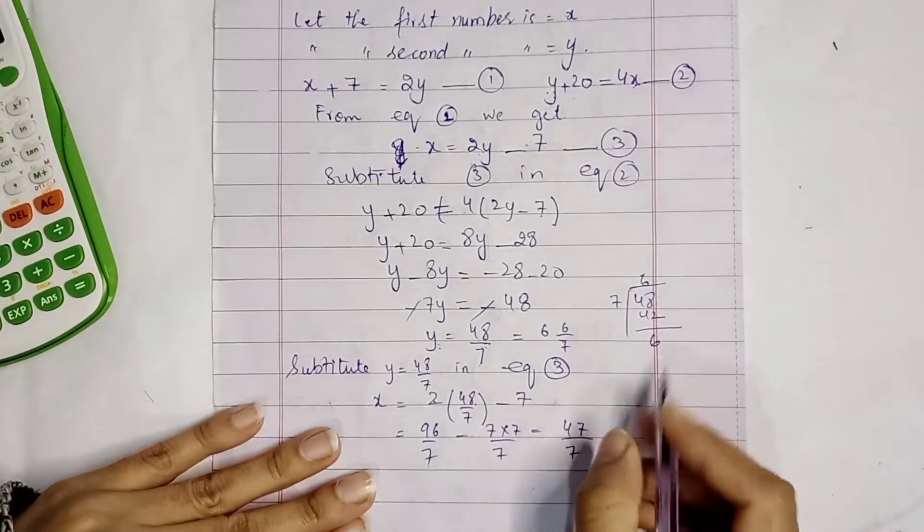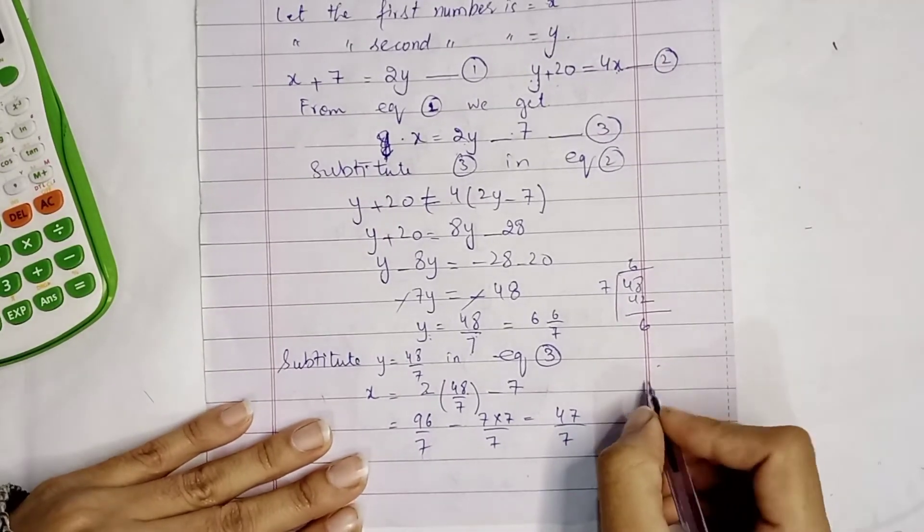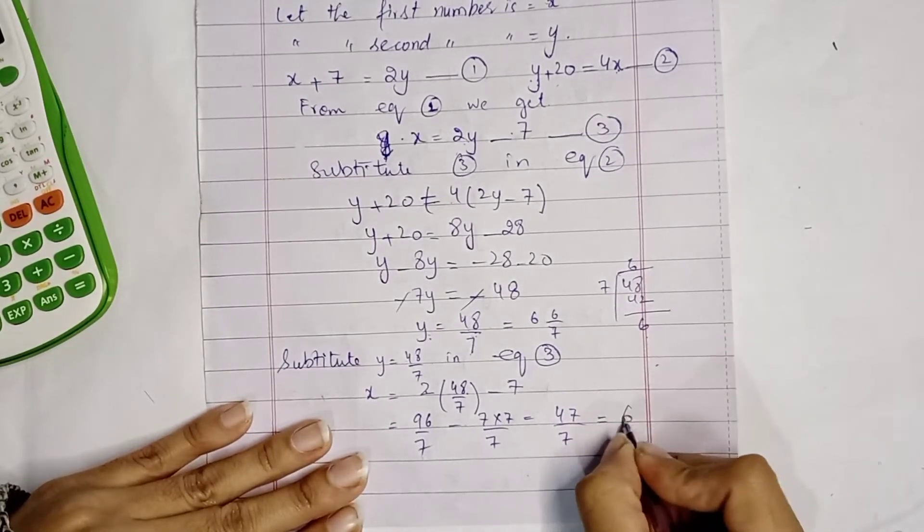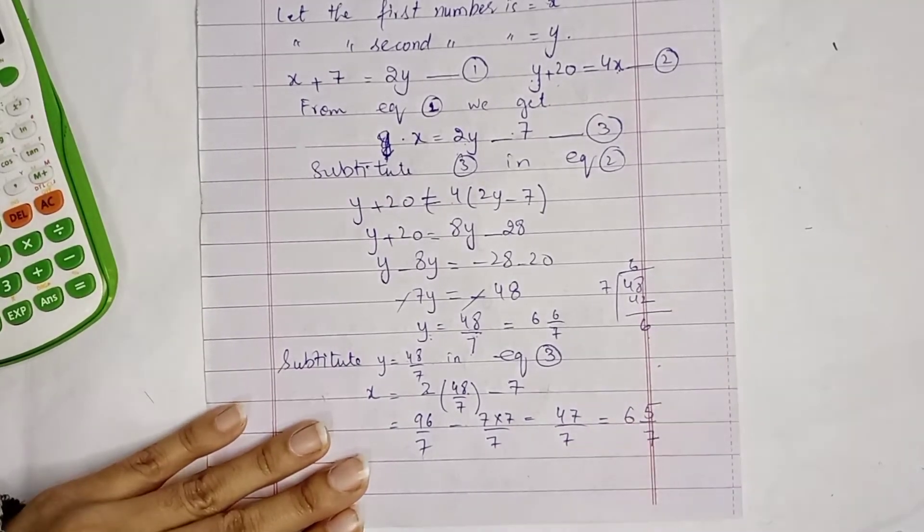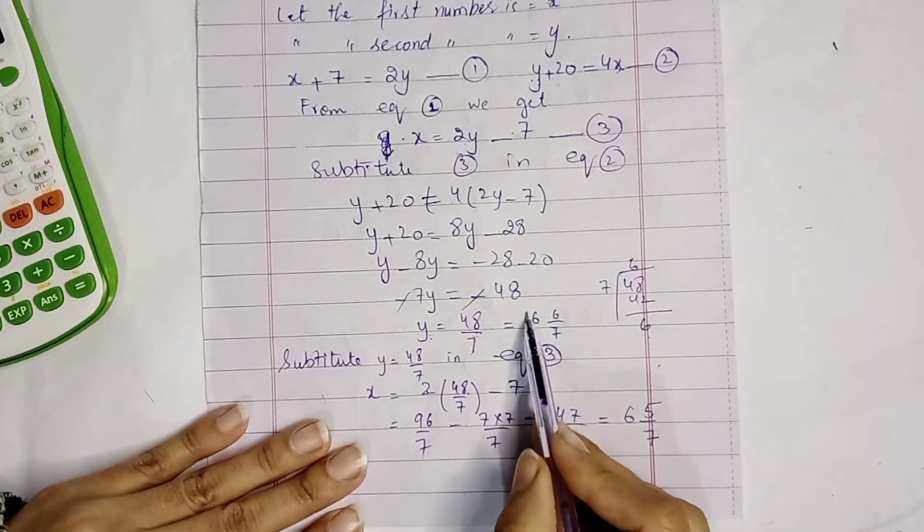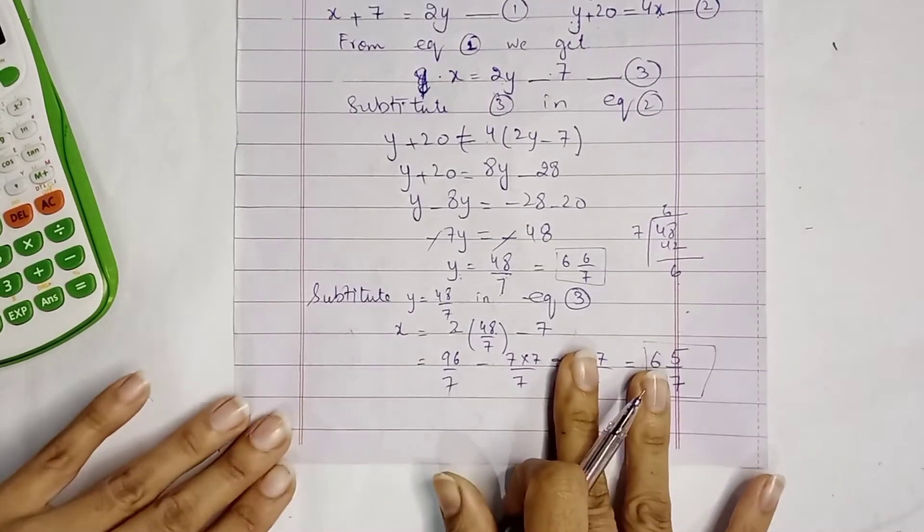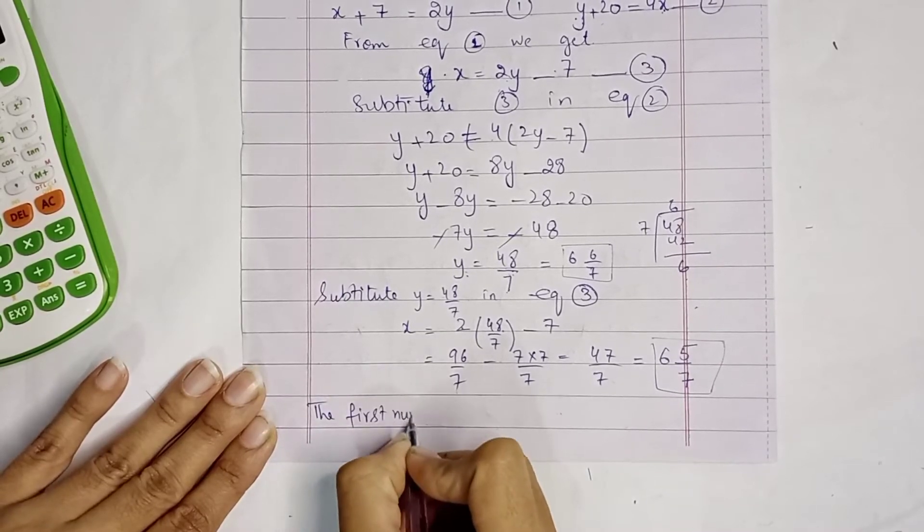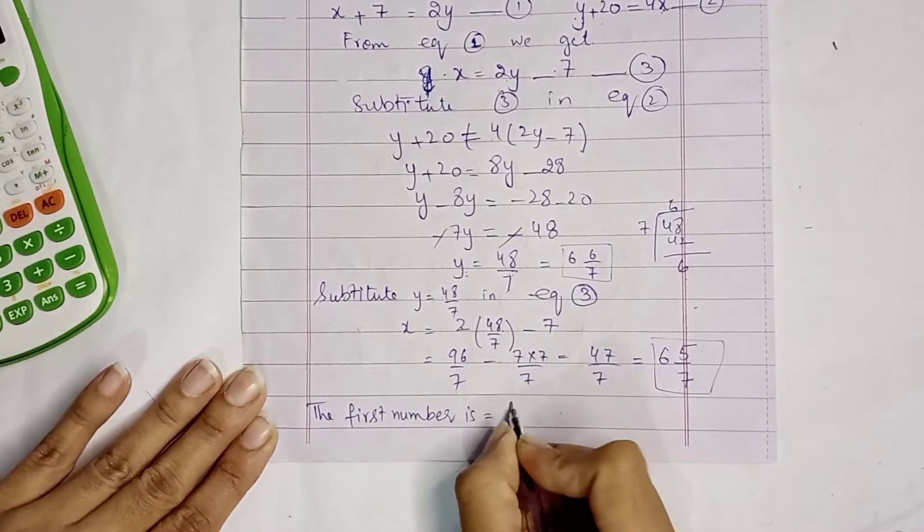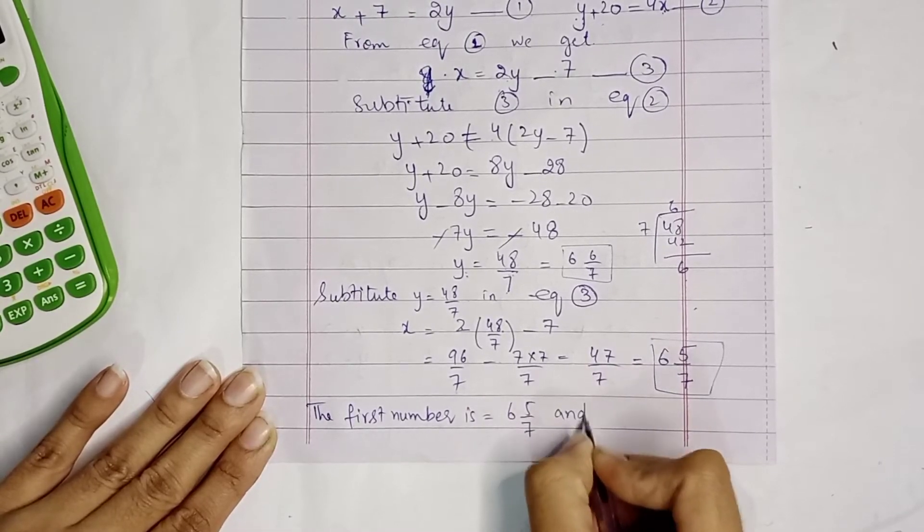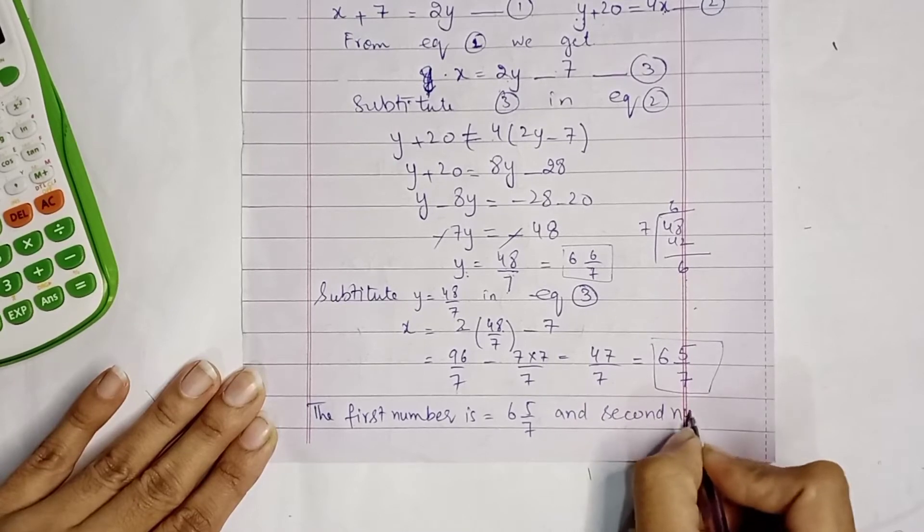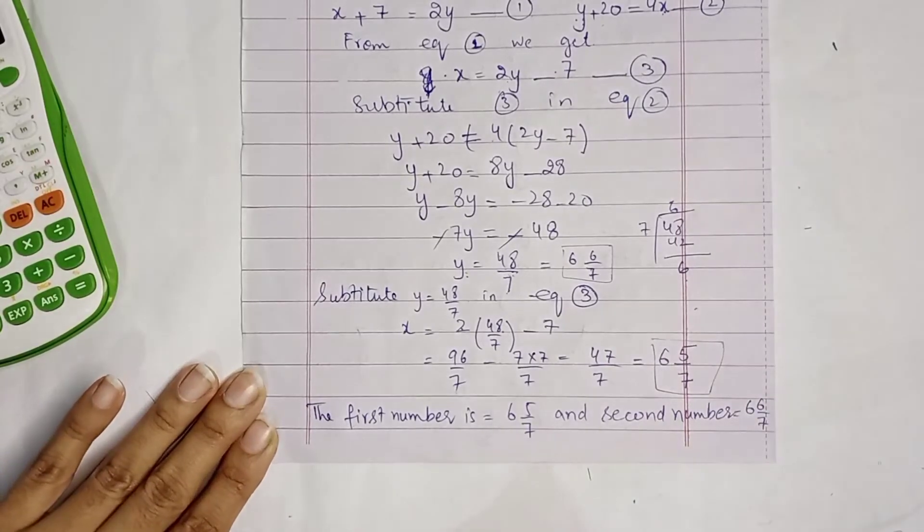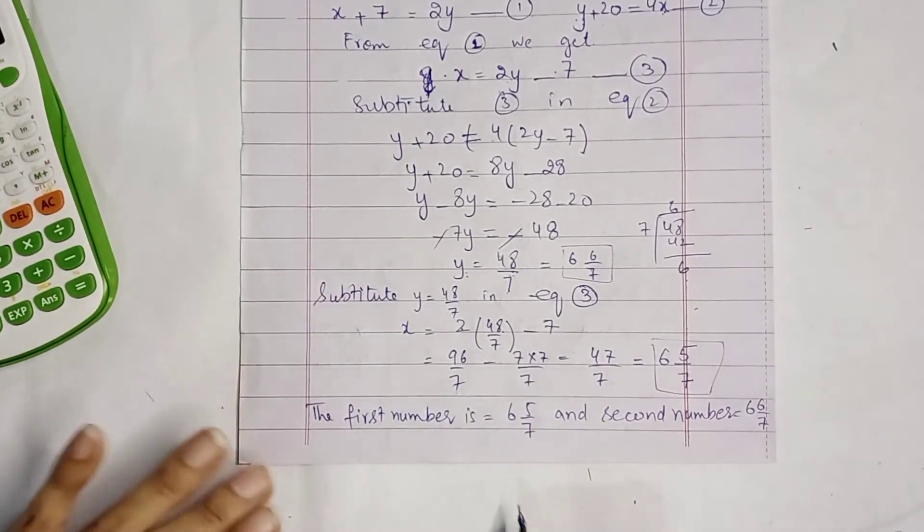We have y value and x value. The first number is 6 and 5 by 7, and second number is 6 and 6 by 7. This is solved now.